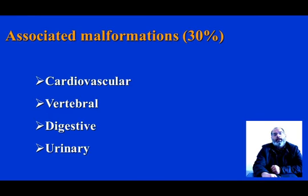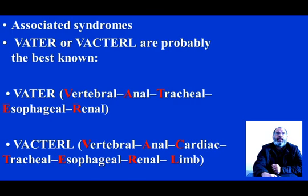In oesophageal atresia, associated malformations are frequent, occurring in about 30% of cases. We can have cardiovascular, vertebral, digestive, and urinary malformations. These associated malformations can be grouped in syndromes like VATER or VACTERL, which are probably the best known.